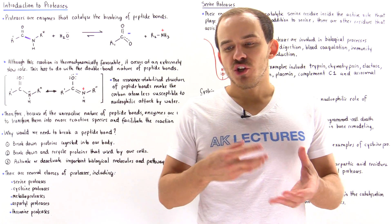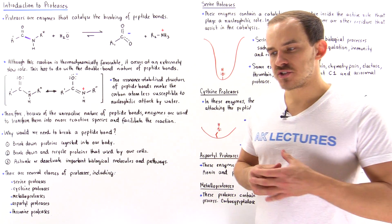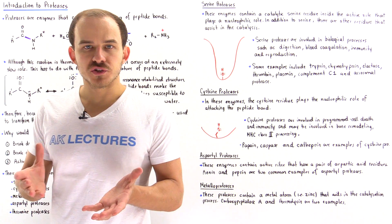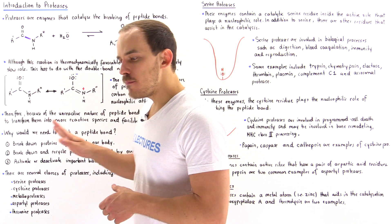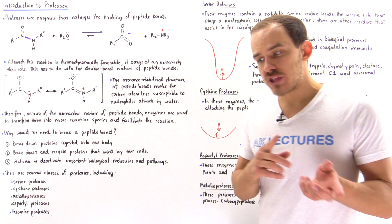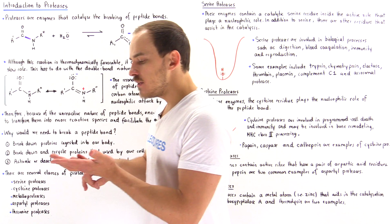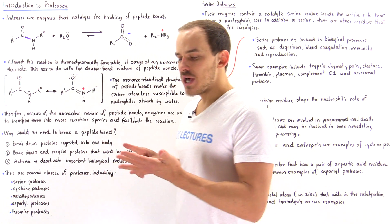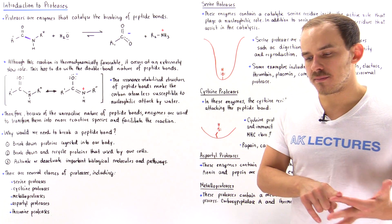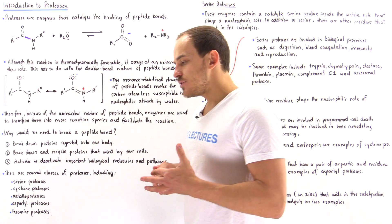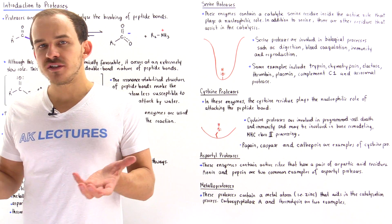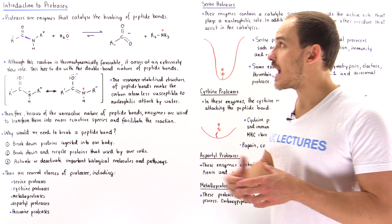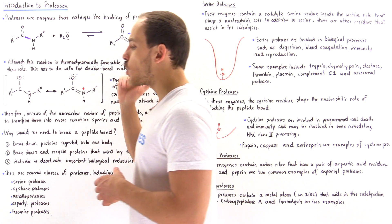The enzymes of our body use a combination of different mechanisms to carry out their catalytic function and speed up the rates of biological reactions. The four major mechanisms of action include covalent catalysis, acid-base catalysis, metal ion catalysis, and catalysis by proximity and orientation. To demonstrate these mechanisms, we'll begin our discussion on the first group of protein enzymes used inside our body, namely the proteases.